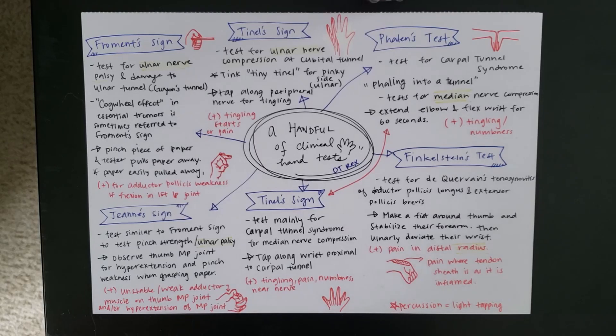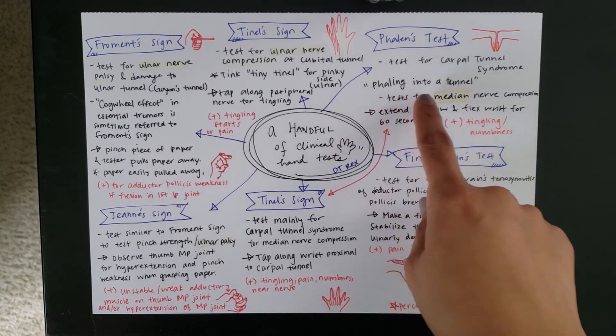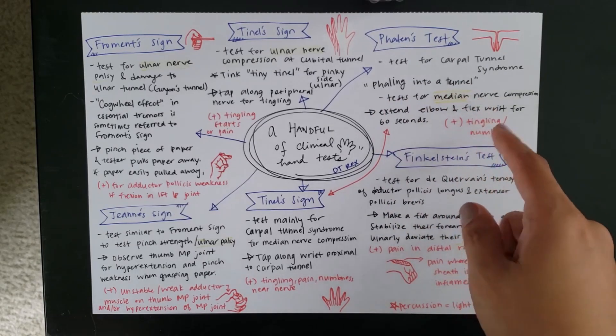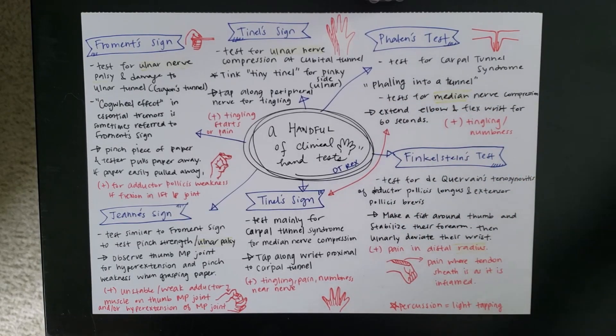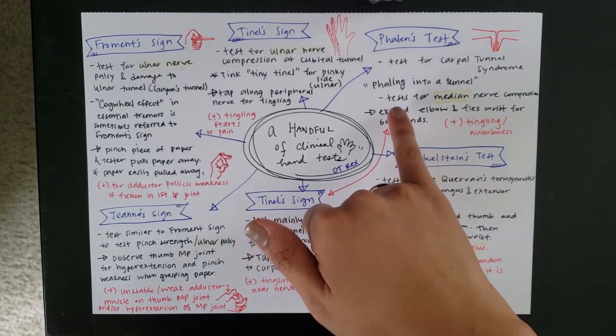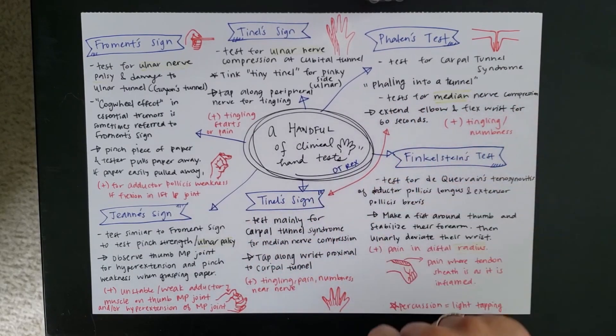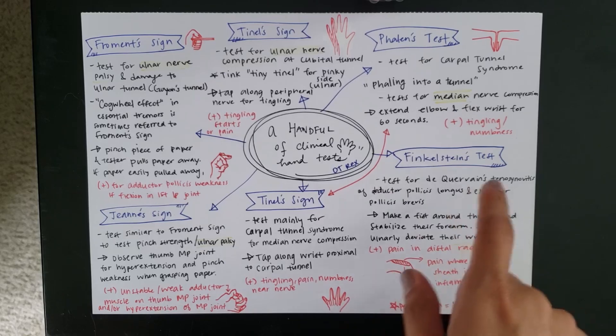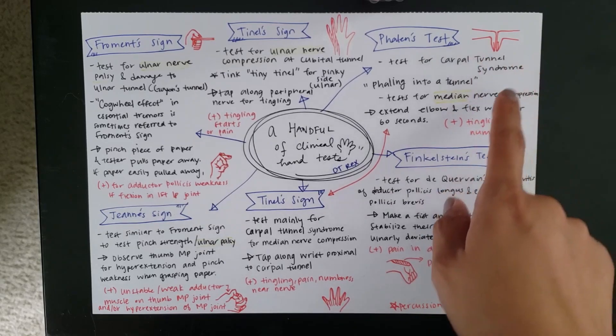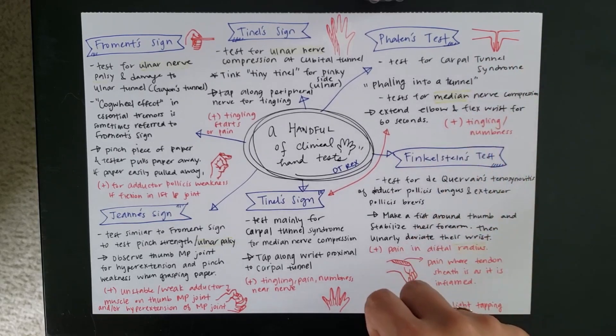All right. So, from Finkelstein's, let's move on to the Phalen's test. This one is a test for carpal tunnel syndrome. And remember, the carpal tunnel is for our median nerve. And the way I like to remember this, as silly as it is, is you are falling into a tunnel. So, then I think of carpal tunnel.